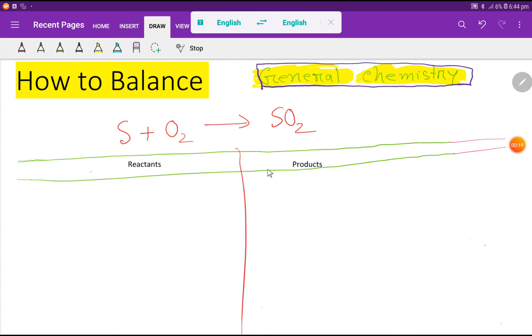In the reactant side, the number of sulfur is one and the number of oxygen here is two. In the right hand side, the number of sulfur is one and the number of oxygen is two.